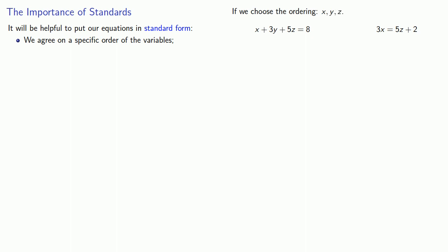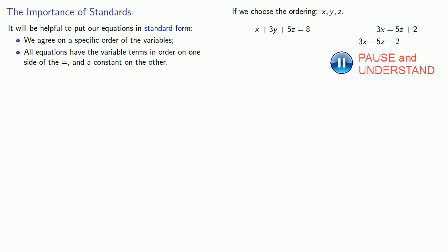Next we'll want to make sure that all equations have the variable terms in order on one side of the equals and the constant on the other. So this equation has all the variable terms on the left-hand side and they're in the order x, y, z, so it's already in standard form. However this equation is not, and so we need to move that 5z to the other side and the variable terms are in order, we have x coming before z.